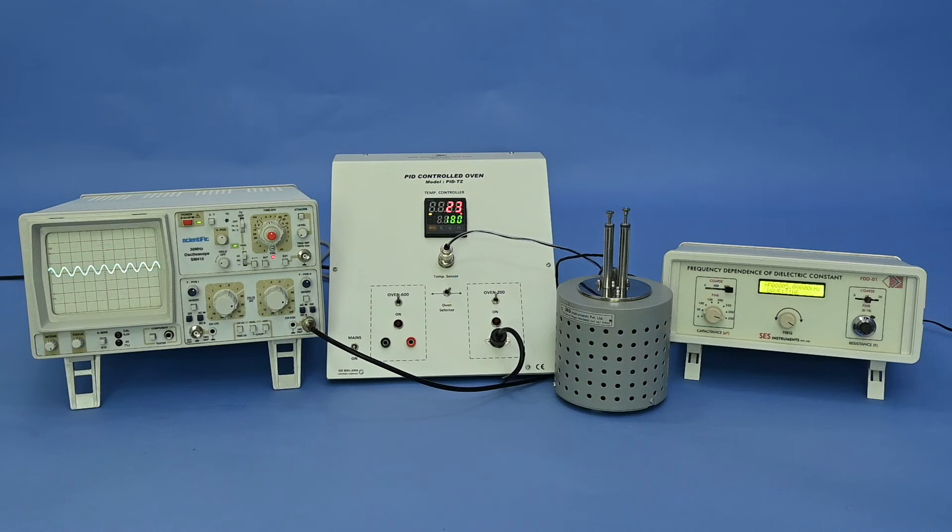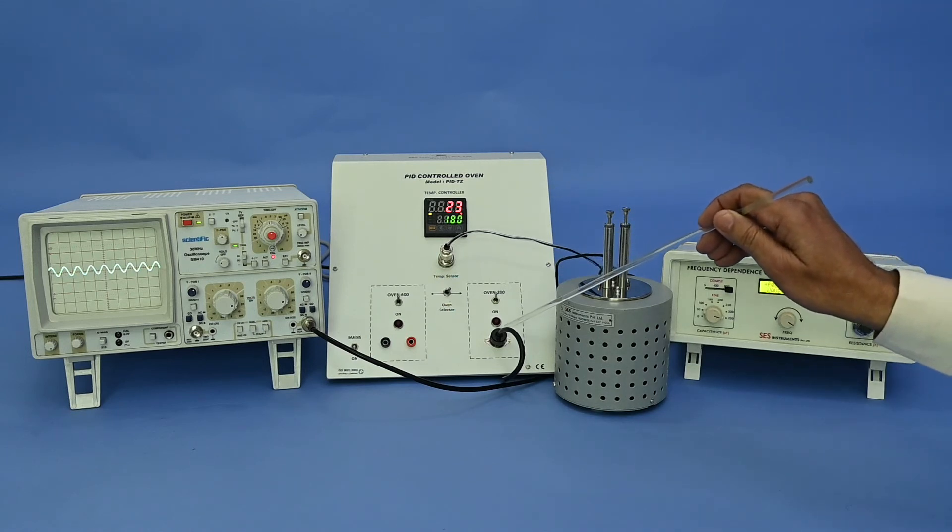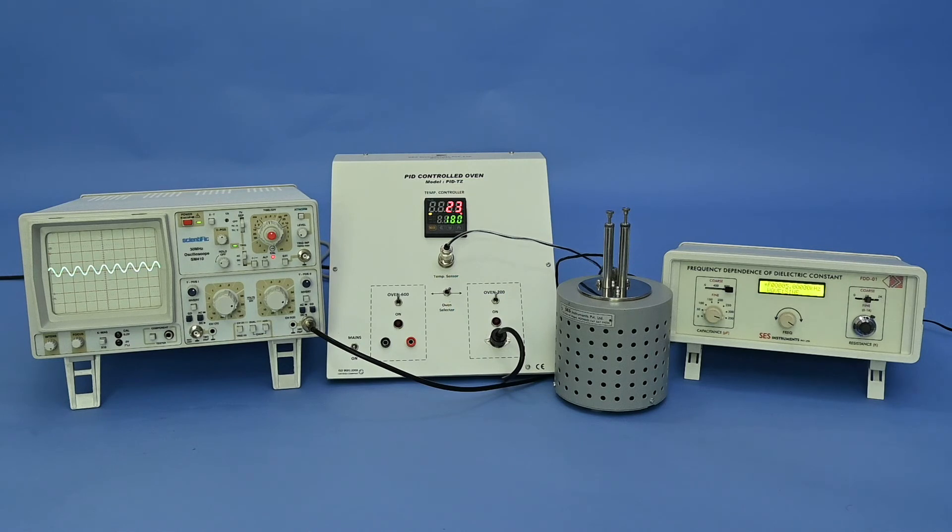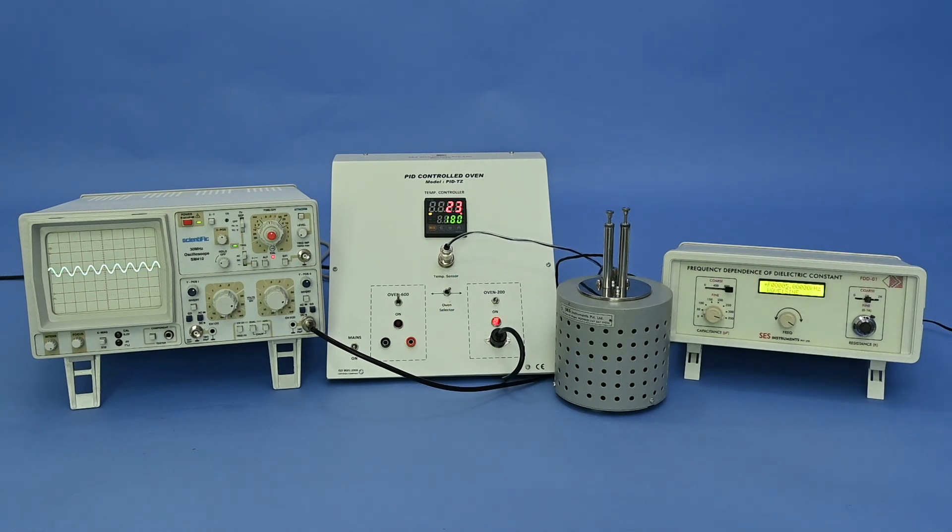Experiment 2: Study of temperature dependence of dielectric constant at different frequencies. Connect temperature sensing 2-pin connector to the PID controller unit and 3-pin oven connector to the PID controller unit. Use barium titanate BaTiO3 sample. Set a frequency say 5 kHz. Switch on the temperature unit and set the temperature from ambient to 180 degrees with 10 degree centigrade interval. Measure the capacitance C4 and R4 by balancing the bridge as in experiment 1 at different temperatures. Now tabulate these C4 and R4 in table 4.